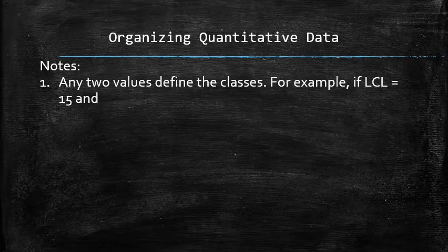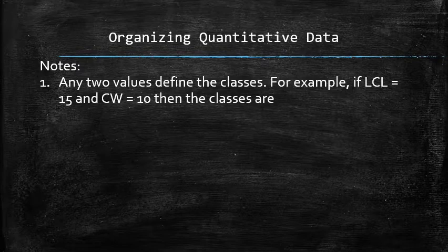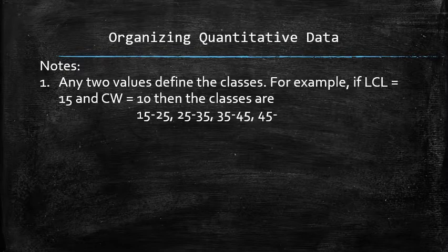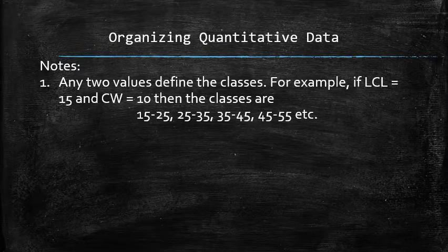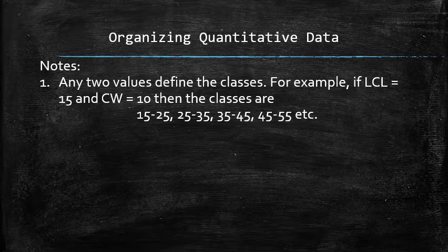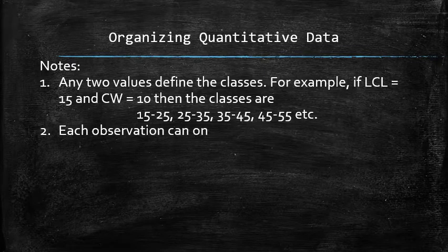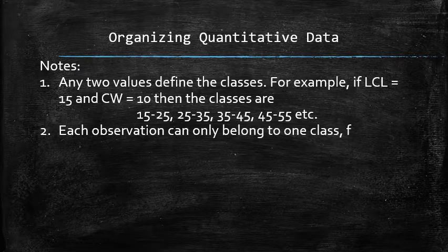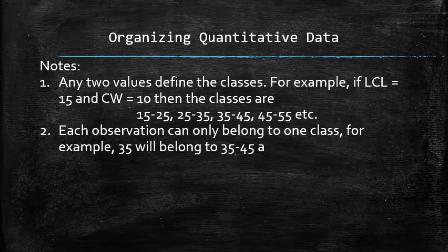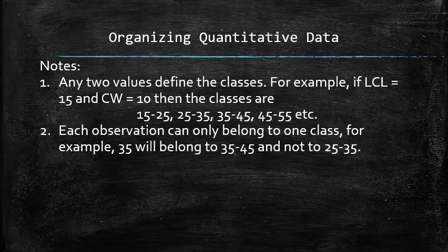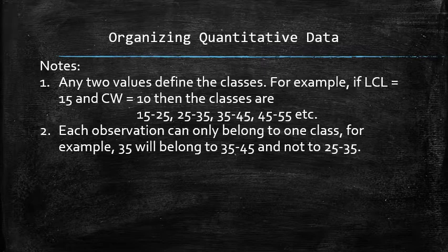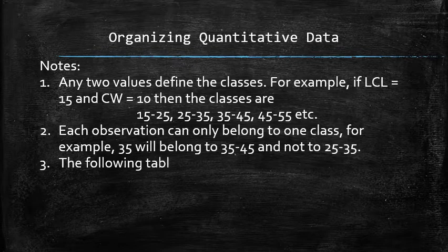For example, if the lower class limit is 15 and the class width is 10, then the classes are from 15 to 25, from 25 to 35, from 35 to 45, and from 45 to 55, etc. Also note that each value can only belong to one class. For example, the value 35 will belong to the class labeled from 35 to 45 and not to the class labeled from 25 to 35.